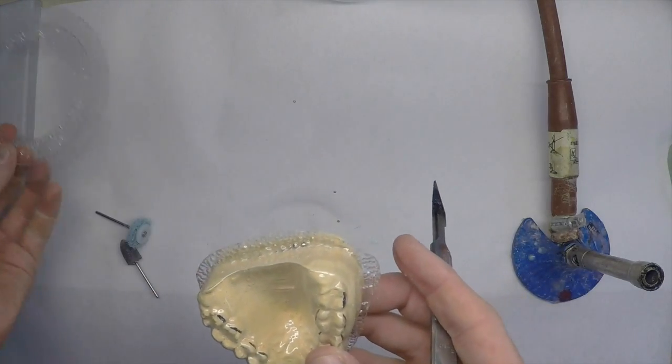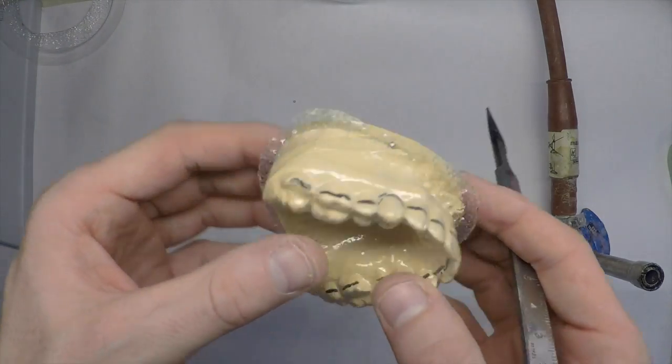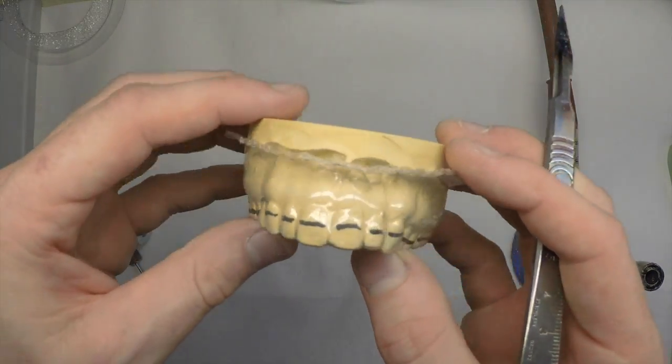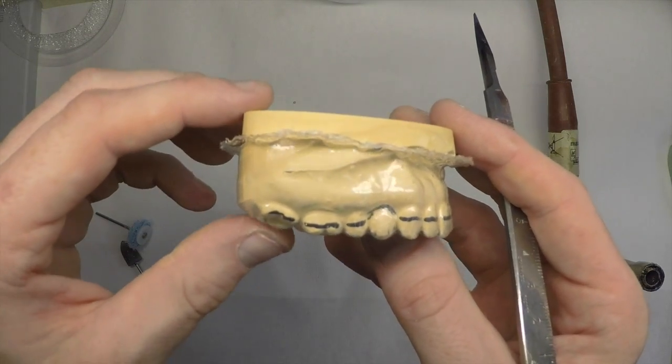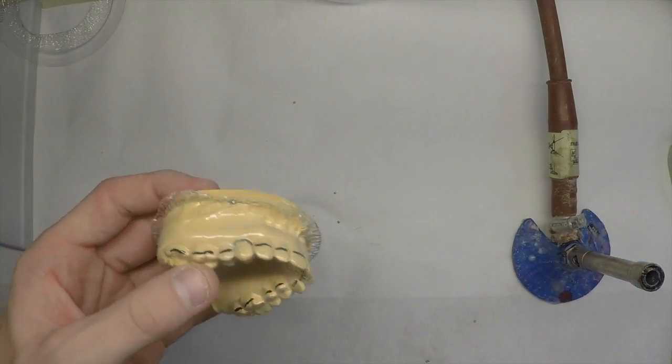Now we've removed the excess, we can trim the stent down to the black line that we've made on the model.